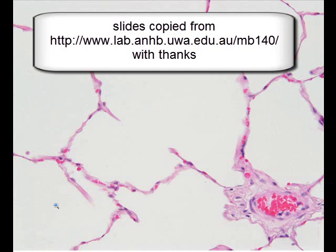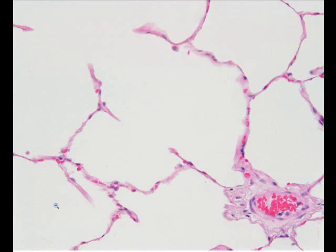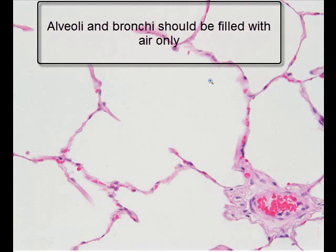The interstitium is the space between alveoli, and it contains blood vessels, a small amount of non-proteinaceous fluid, lymphatics, and connective tissues. These can be difficult to identify, especially for beginners, and some cannot be identified with hematoxylin and eosin stain. What you have to memorize is the ratio of thickness of the alveolar wall to the diameter of the alveoli — alveoli should be filled with air only.